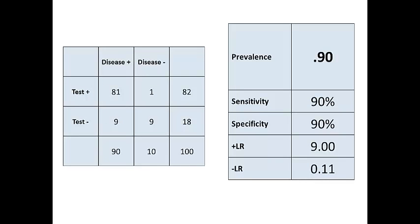Now look at the same sample of 100 but with disease prevalence of 90%. Sensitivity, specificity, and likelihood ratios are the same, but look at the bottom row — the number of false negatives equals the number of true negatives. At the extreme ends of prevalence, which may actually be the case in your own patient population in the clinic, the likelihood ratios may not be as useful as you think. This limitation isn't covered or considered carefully enough.